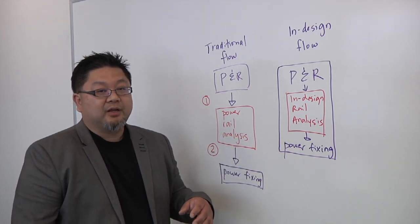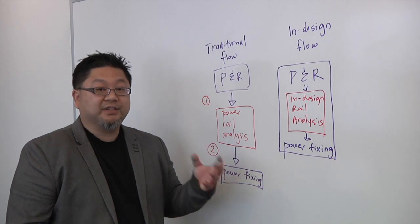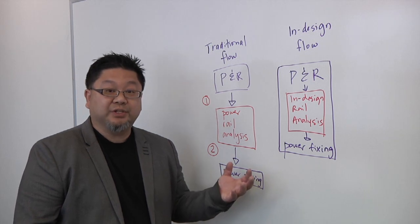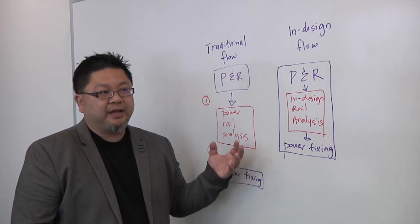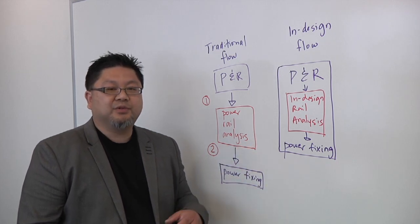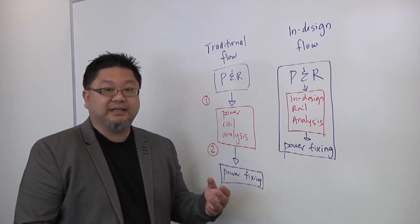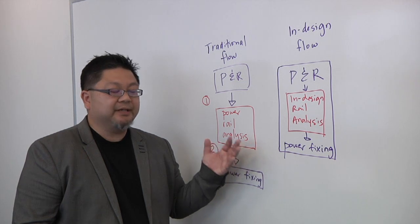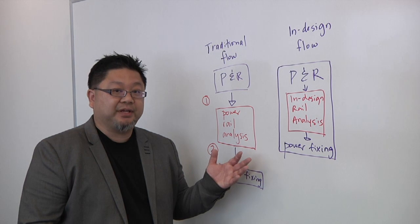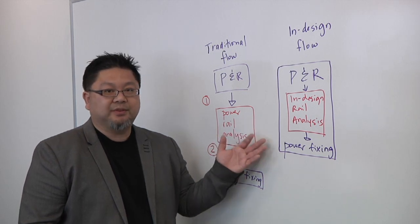In addition, sometimes they over-design their grids, but then later on they may actually need those resources. So by being able to do in-design rail analysis early, it enables you to reduce the margining needs. That's why at the lower geometries we see a need for this type of technology that's seamless within the placement route.